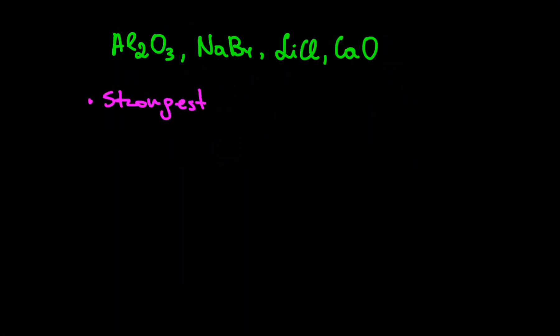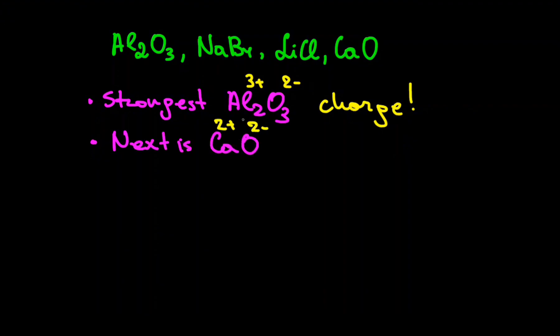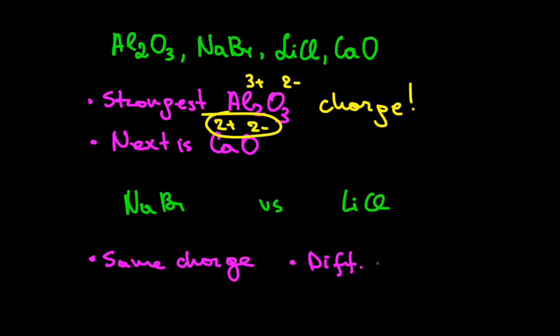Let's look at the next example and use the same principles. The strongest ionic bond is aluminum oxide because of the highest charge. Next is calcium oxide for the same reason. Calcium and oxygen both have the oxidation state of plus 2 and minus 2. To compare sodium bromide and lithium chloride, we look at their ion sizes because they have same overall charge. Both lithium and chloride are smaller than sodium and bromide, so the bond will be stronger.